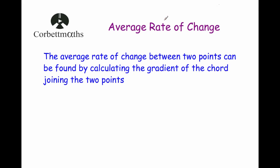In this video we're going to look at how to work out the average rate of change at GCSE level. There are two different rates of change you might need to calculate: the instantaneous rate of change and the average rate of change. If you want to revise instantaneous rate of change, go on Corporate Maths and watch the video on that one. The average rate of change between two points can be found by calculating the gradient of the chord that joins those two points.